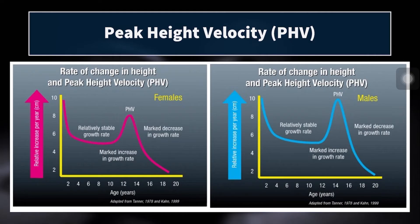Recall that the peak height velocity for males and females is slightly different. Women are actually possibly taller and heavier than males for a period, peaking in their height velocity — the rate at which they are growing — at age 12 or 13, while for males it's not really until 14 or 15, so a couple of years later.